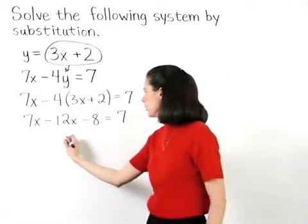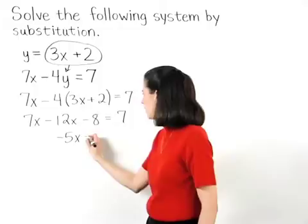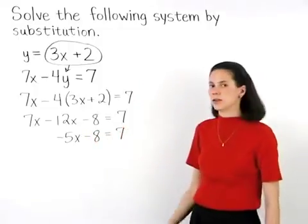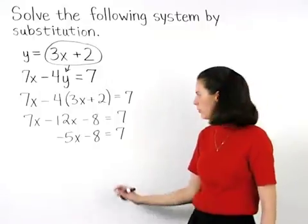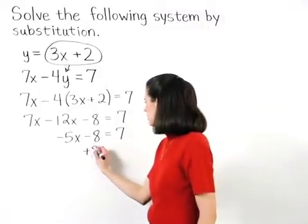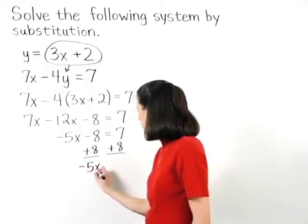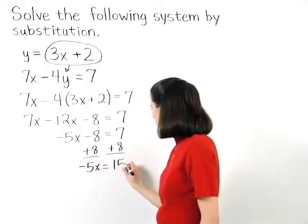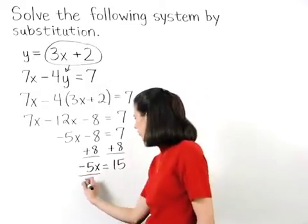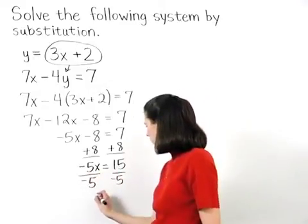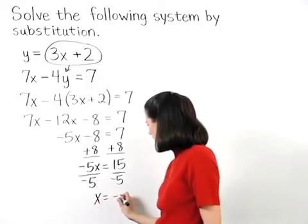And simplifying further, we have negative 5x minus 8 equals 7. Adding 8 to both sides gives us negative 5x equals 15. And dividing both sides by negative 5, we find that x equals negative 3.